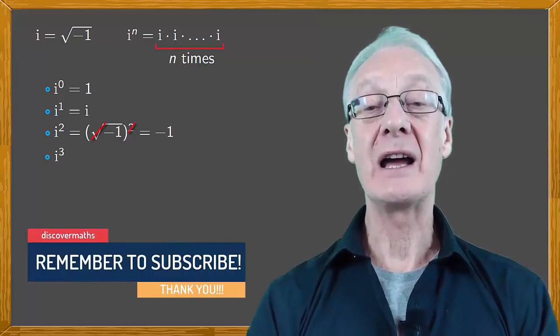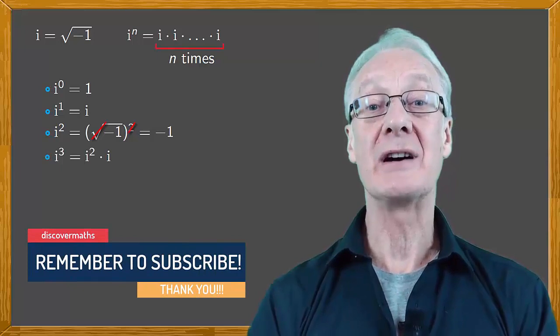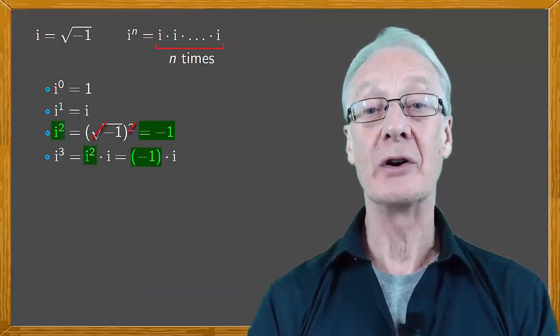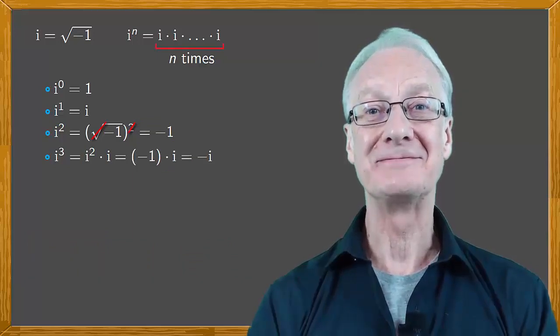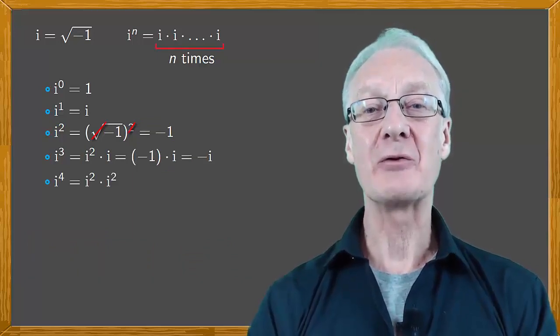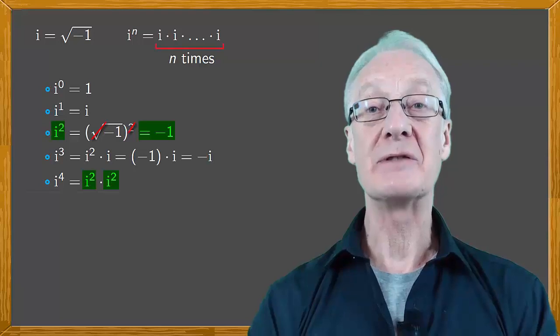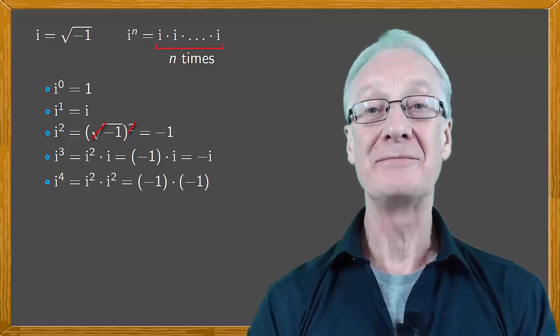Moving on to i cubed, this is i squared times i, and since i squared is minus one, the result is minus i. i to the fourth is i squared times i squared, which is minus one times minus one, which is one.